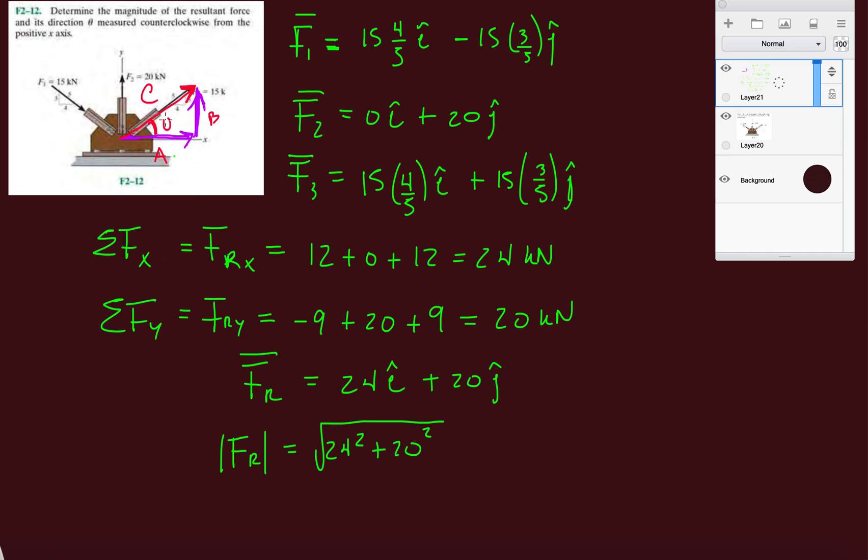And if you want to solve for this angle, which we will be, you just take inverse tan of B over A, right? Because SOHCAHTOA. TOA is tangent equals opposite over adjacent. So yeah, let's go right there. So my magnitude is square root of 24 squared plus 20 squared. So that's roughly 31.2 kilonewtons.